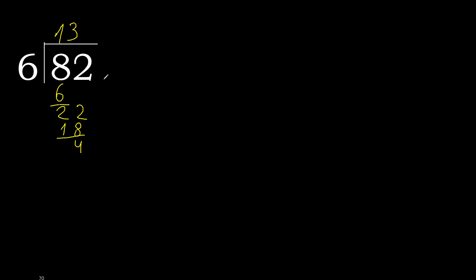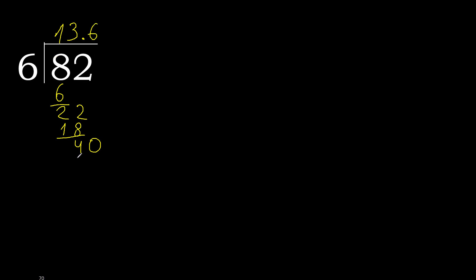Subtract. There is no next digit, so we complete with 0 and add a decimal point here — 0 point. Bring down: 40. 6 multiplied by 7 is greater. 6 multiplied by 6 is 36.